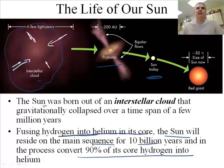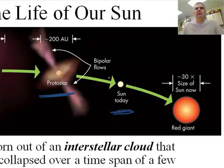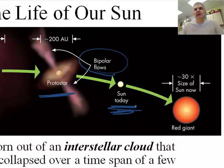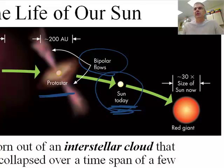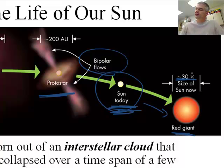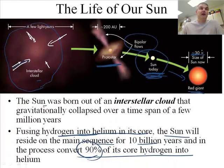It turns into a protostar — we'll learn this in more detail later — and eventually there's something called bipolar flow. This is our Sun today. Once 90% of its hydrogen has been burned, our Sun is going to turn into a red giant. It'll be 30 times the size of the Sun today.